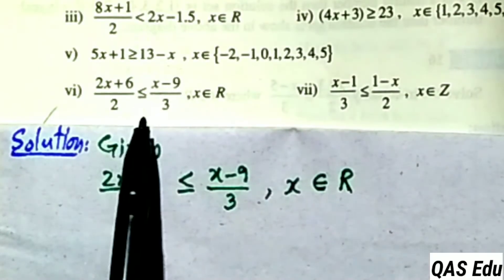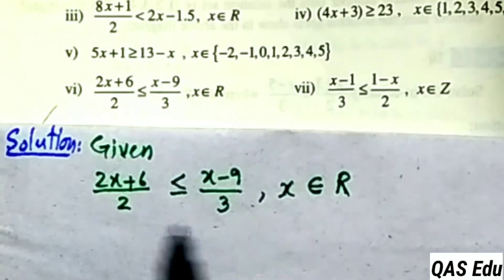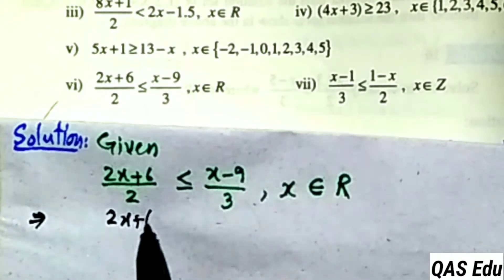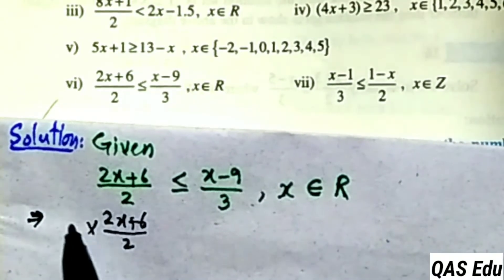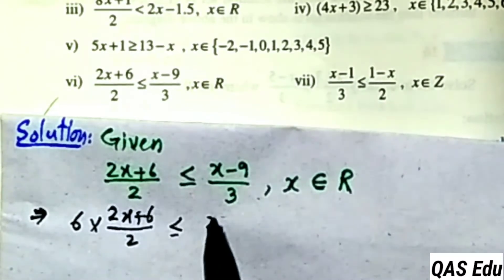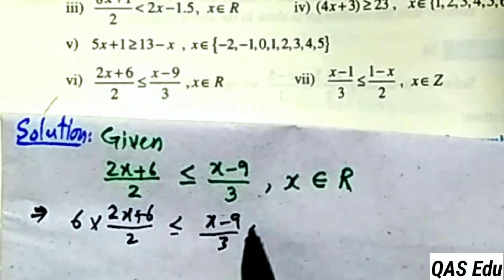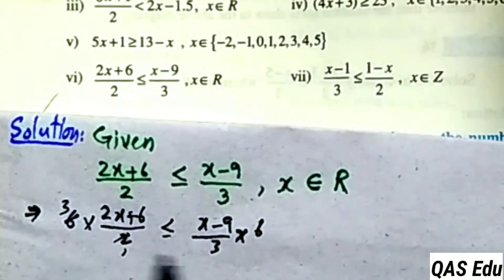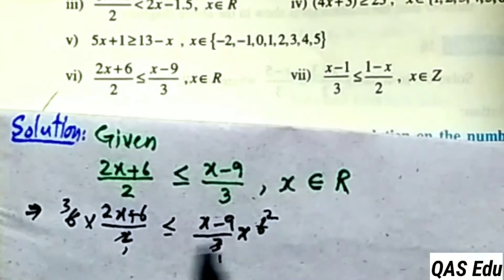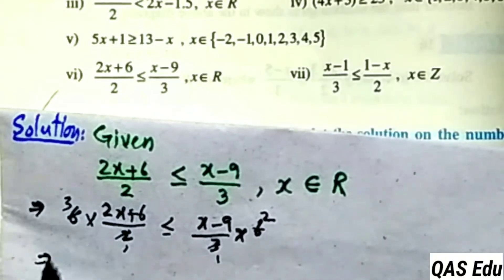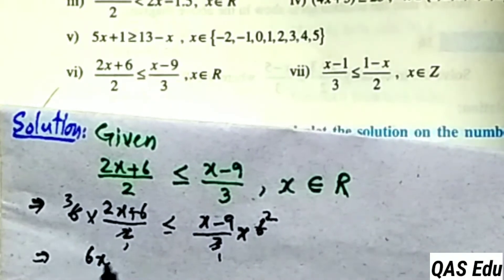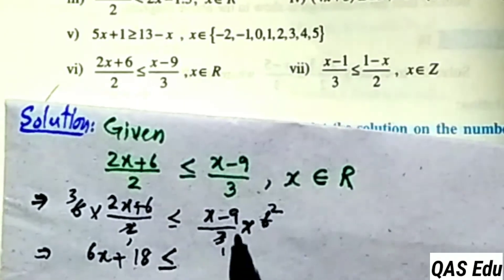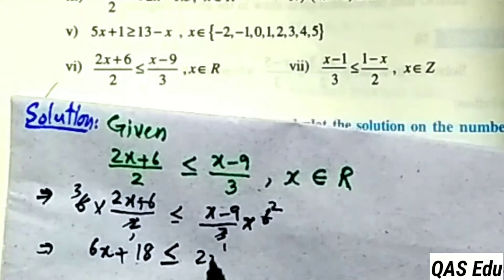Part 6: There is a fraction inequality with denominators 2 and 3. The LCM of 2 and 3 is 6. Multiplying the left side by 6: 2 ones are 2, 2 threes are 6, 3 ones are 3, 3 twos are 6. After multiplying through: 6x plus 18 is less than or equal to...